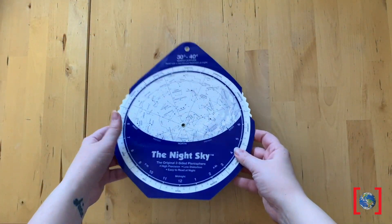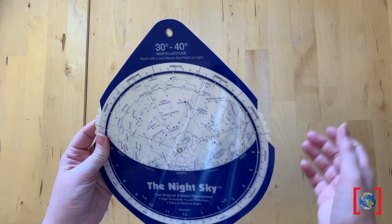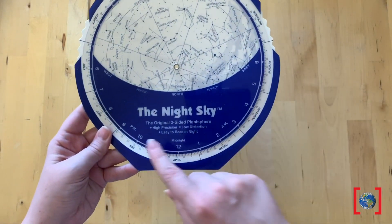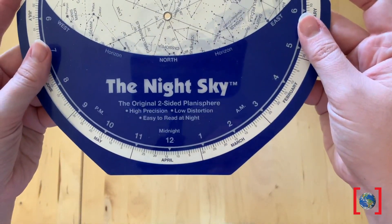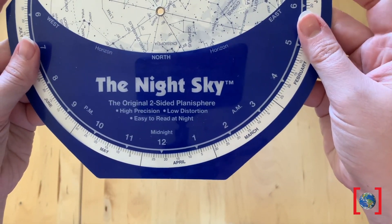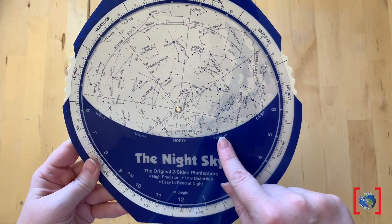Planispheres, or star wheels, are really simple stargazing tools. Make sure you get one that's for your part of the world where you live. If you look around the edge, you'll see dates and times. Line up today's date with whatever time you're going stargazing, and then make sure you're facing the right direction.